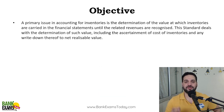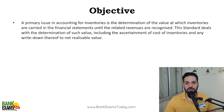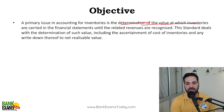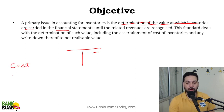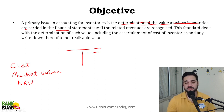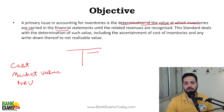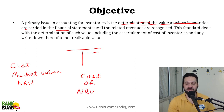The objective of AS-2 is to address the primary issue in accounting for inventories: the determination of value at which inventories are carried in financial statements. Inventories appear on the asset side of the balance sheet. The question is whether to record inventories at cost or market value or net realizable value. This accounting standard answers that — inventories are to be recorded at cost or net realizable value (NRV), whichever is lower.